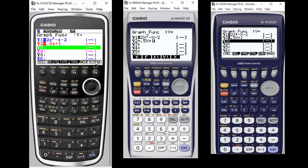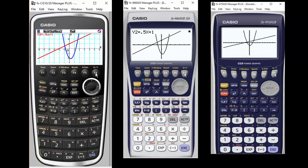We've entered the functions, and now we're going to graph. You'll see the graphs are the same, and yet they look different because of the size of the screens. That's one difference—there are different size screens.